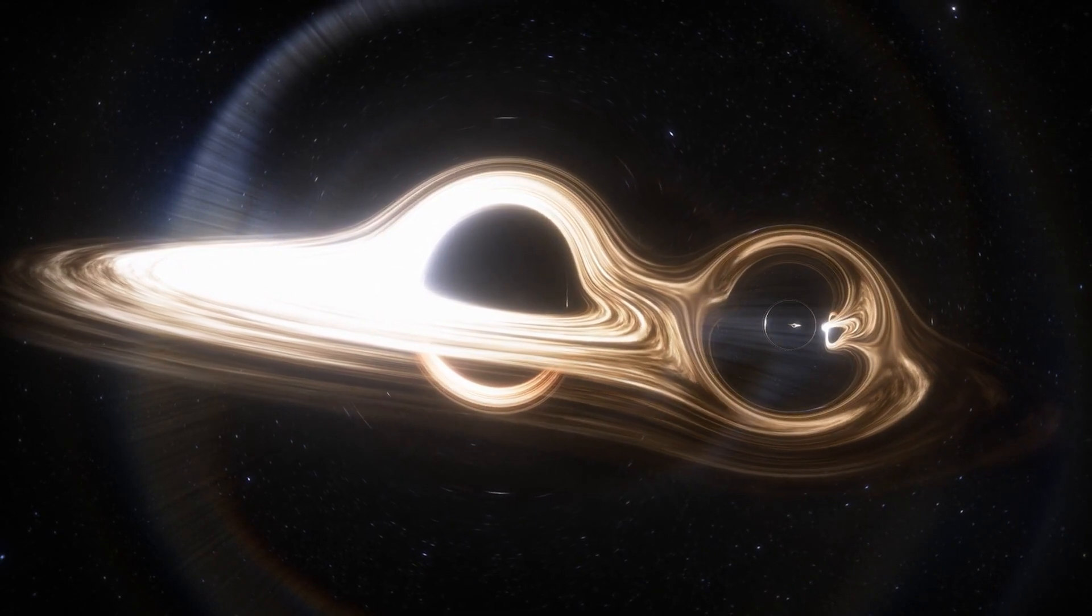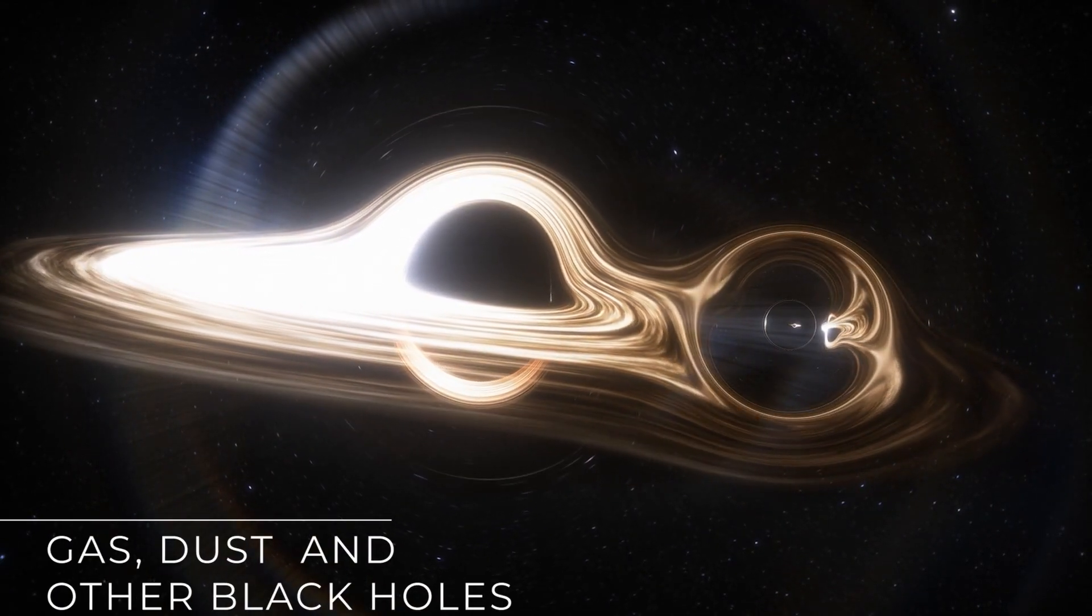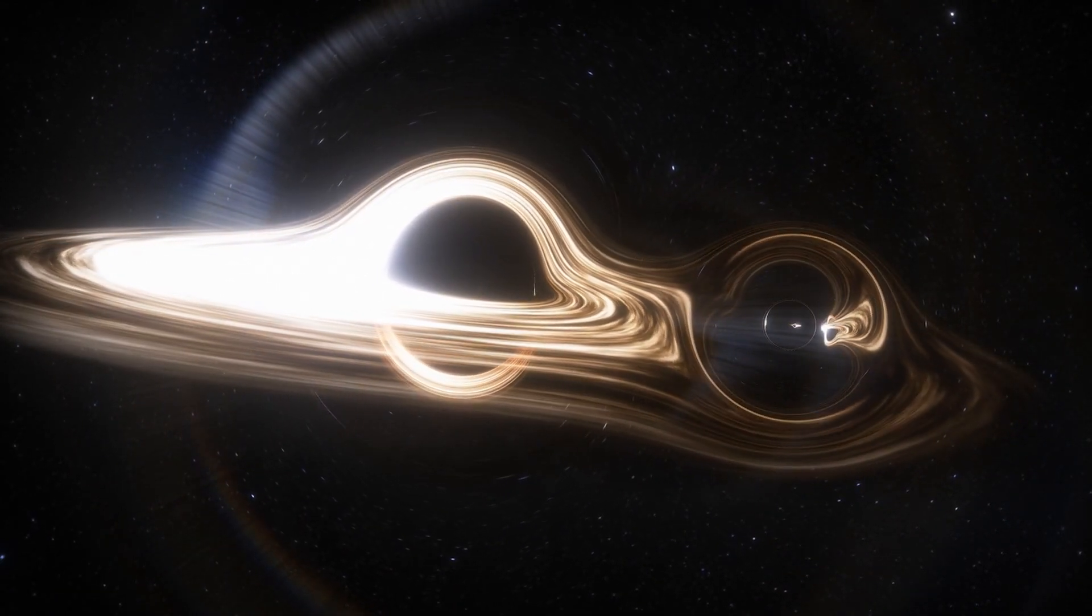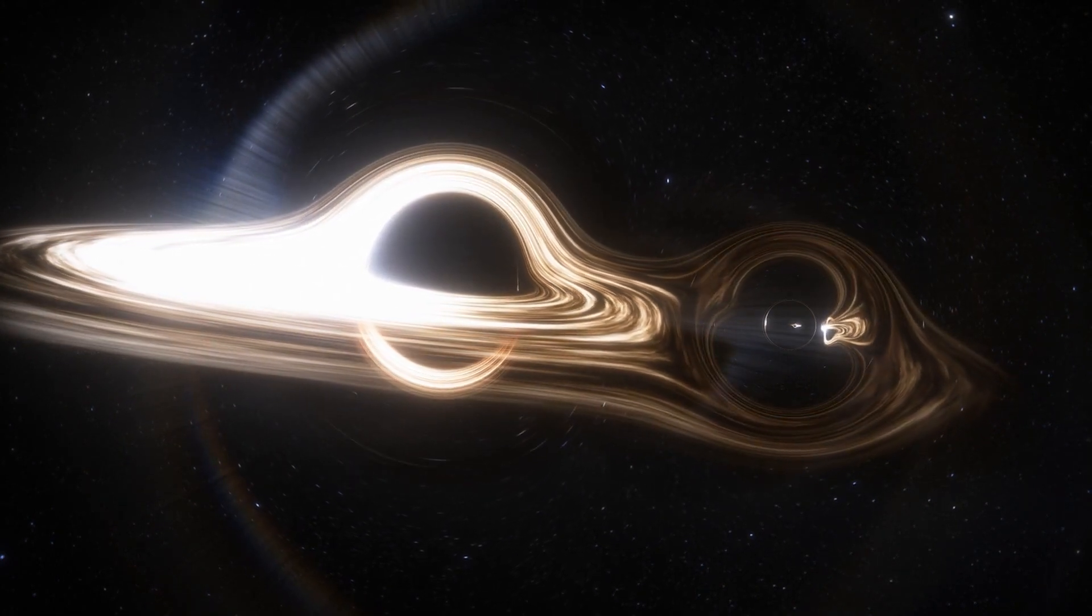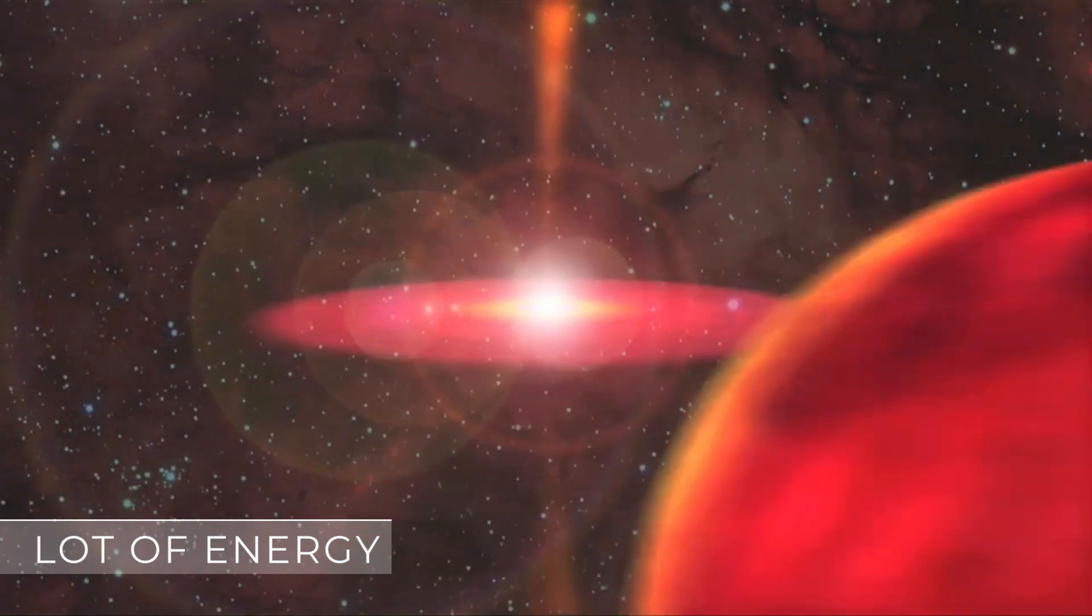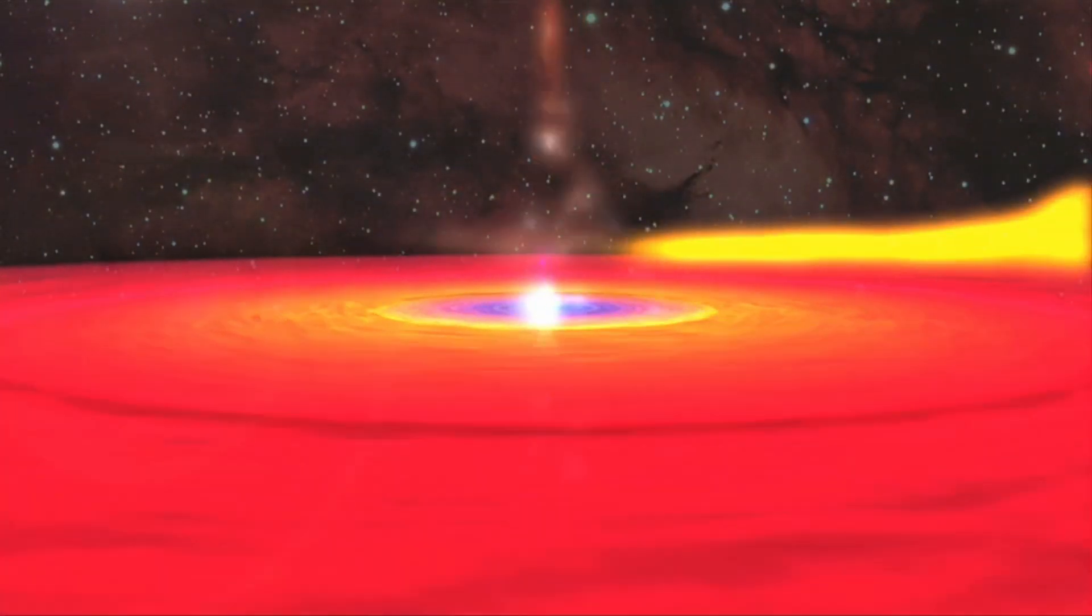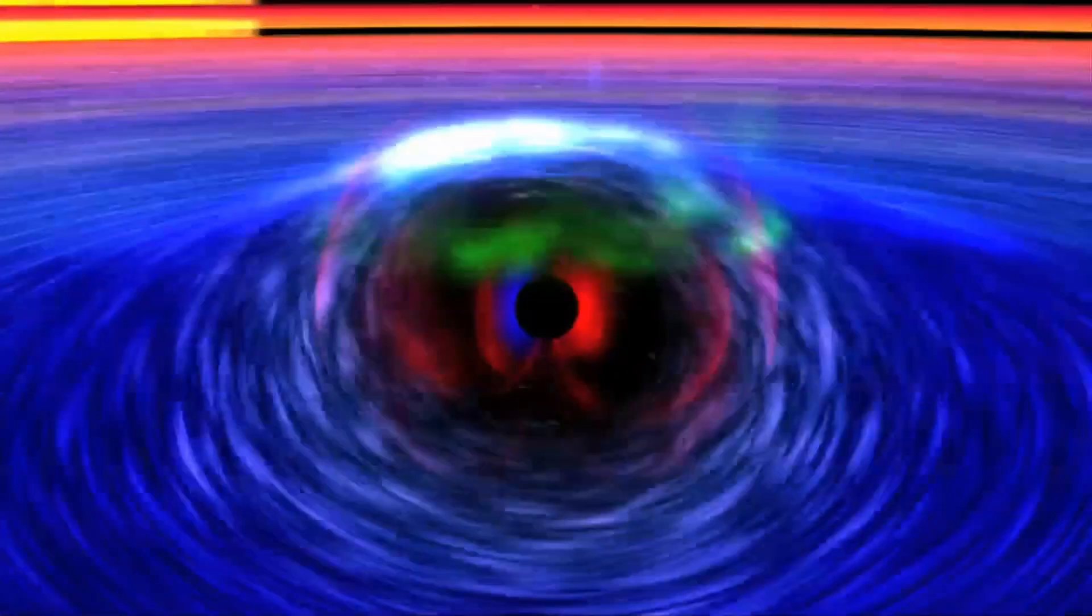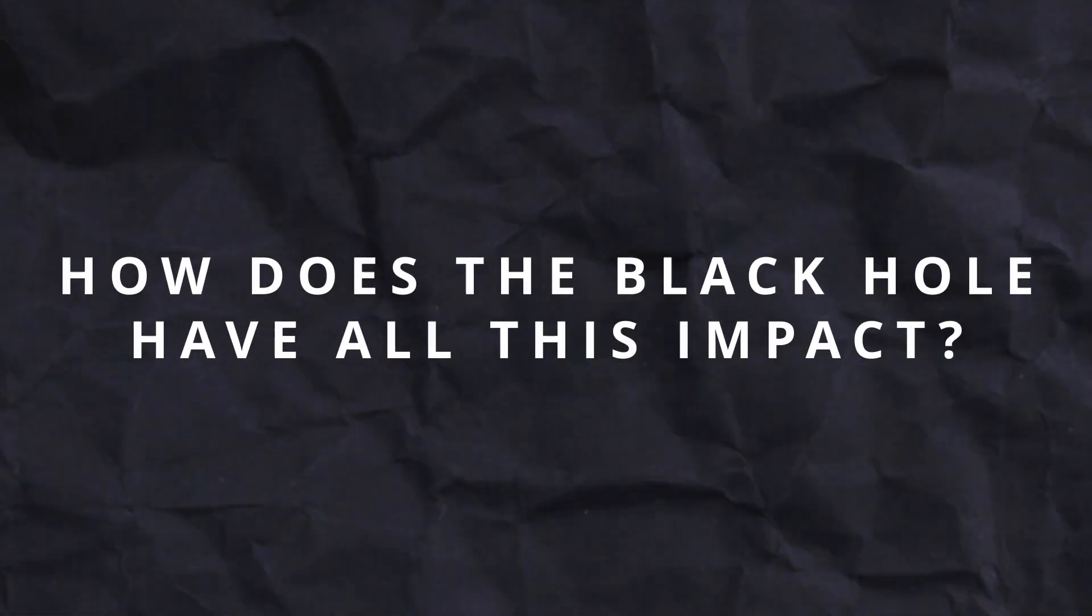With friction with other materials such as gas, dust, and even other black holes, a black hole can become massive and therein lies the danger. When a black hole reaches such measurements, it generates a lot of energy and its relationship with the galaxy becomes a dangerous, even fatal, symbiosis. But how does the black hole have all this impact?